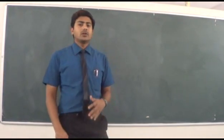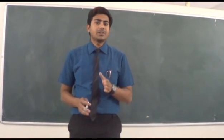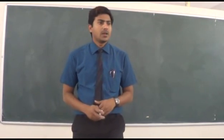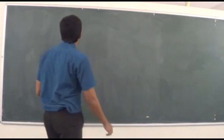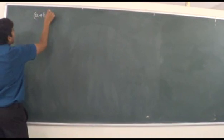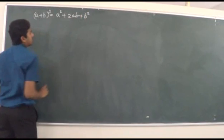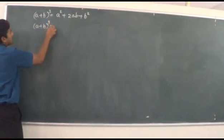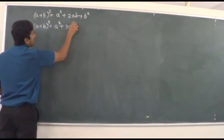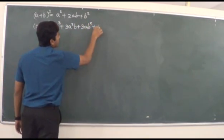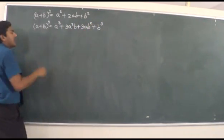Hi. Today we are going to see how to calculate the coefficient in a binomial expansion. Basic binomial expansions which we know are: (a+b)² which is a² + 2ab + b², and (a+b)³ which is a³ + 3a²b + 3ab² + b³, and so on.